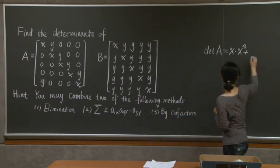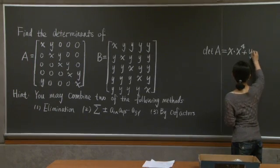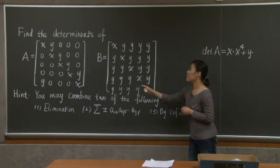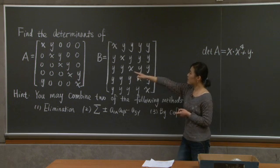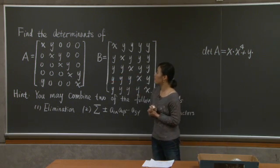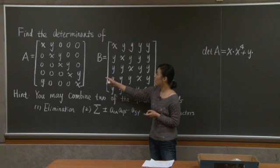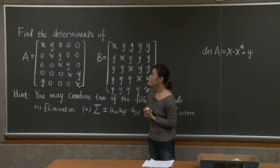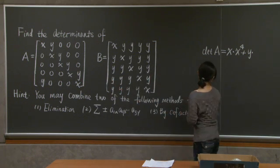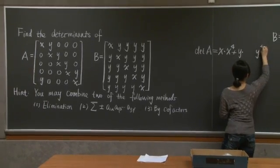Plus the only other non-zero entry in that column is the y at the very bottom. So you put y here. And you multiply y by the cofactor of that spot, which is the determinant of the left over 4 by 4 matrix again. In this case, it's lower triangular, and its determinant is y to the power of 4.